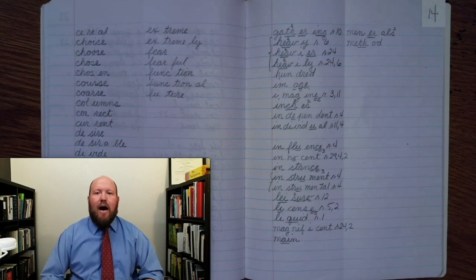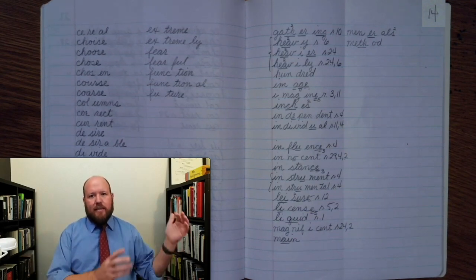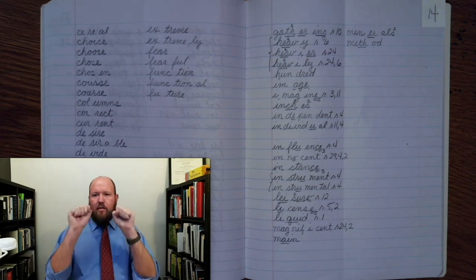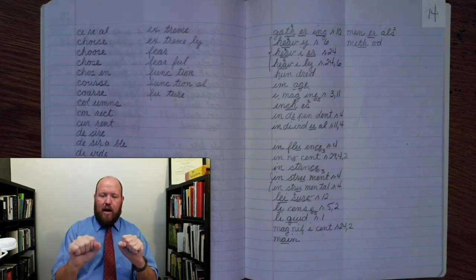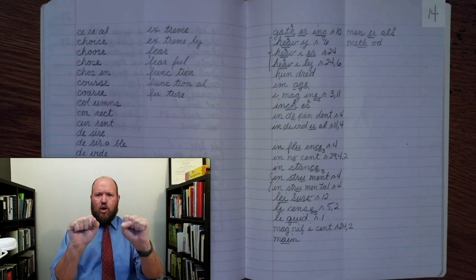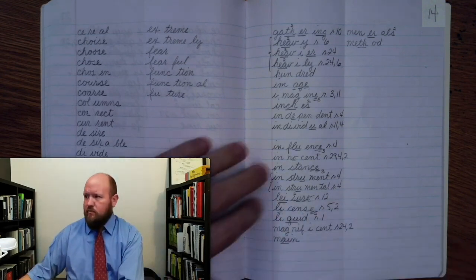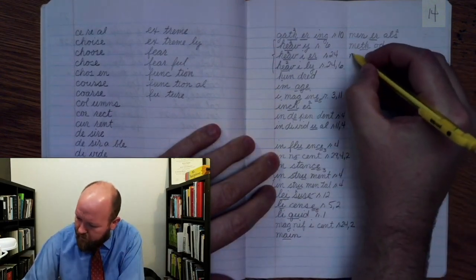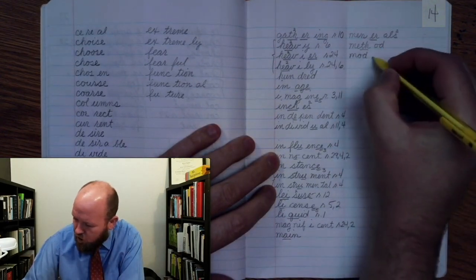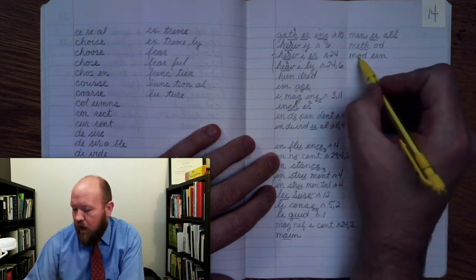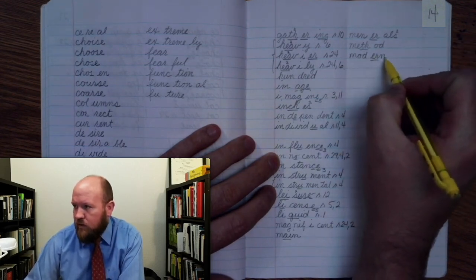The next word is modern. Modern, right? So not something that's classic or ancient, but something that's modern. What's happening right now. Modern. Base word, modern. Mod, earn. M, ah, da. Ur, n. Ur of her. Modern. Mod, urn. Modern. Markings. M, ah, da. Ur, once. N. Modern.